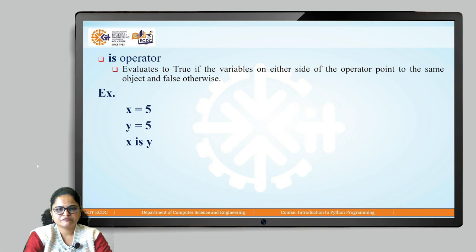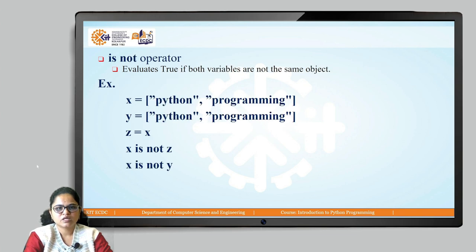If both variables are pointing to different values, it results in false. The 'is not' operator evaluates to true if both variables are not the same objects. For example, if we have one list assigned to x and another list assigned to y, and we assign z equals to x, then x and z share the same memory location. So 'x is not z' results in false, while 'x is not y' results in true.